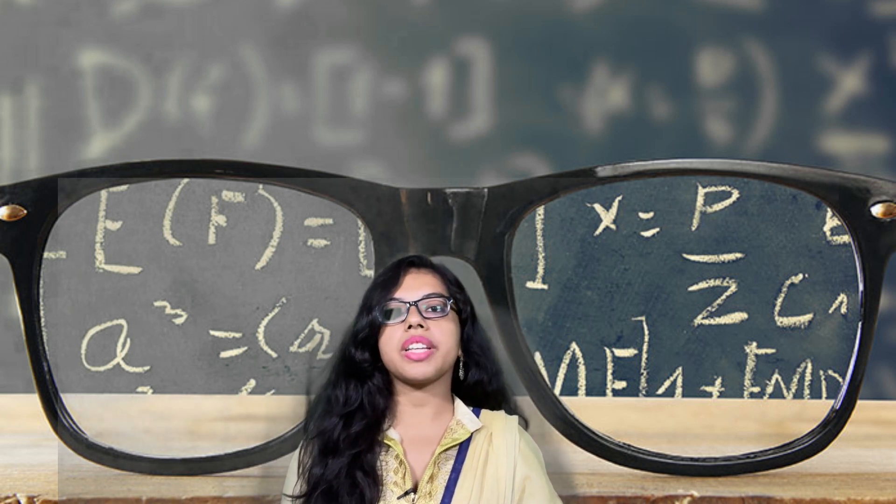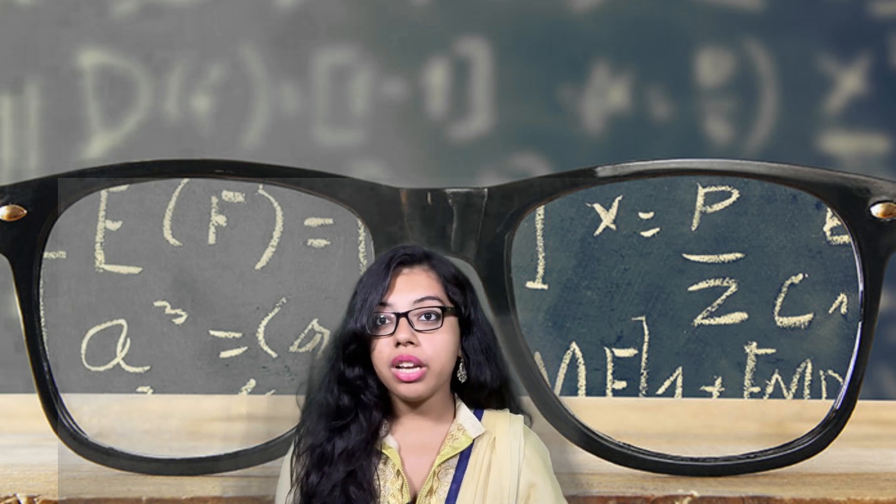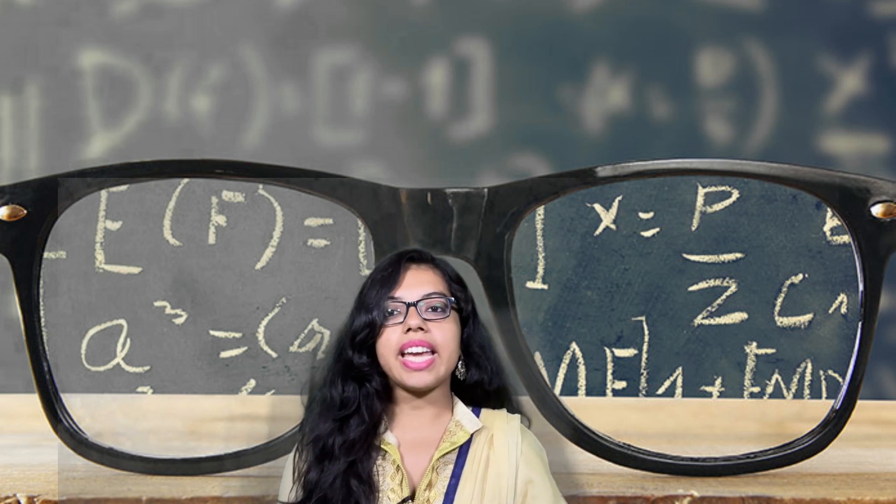Sunlight, it turns out, helps control the eye's growth, preventing it from elongating excessively.